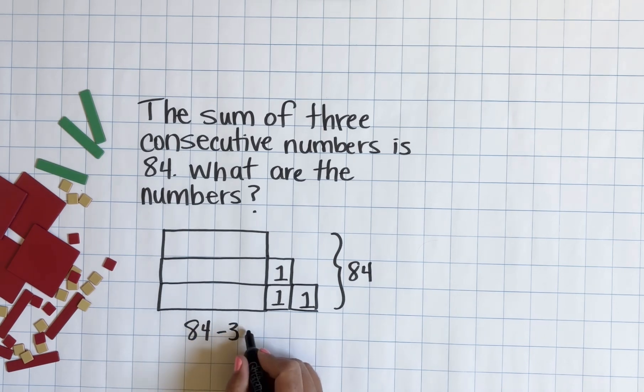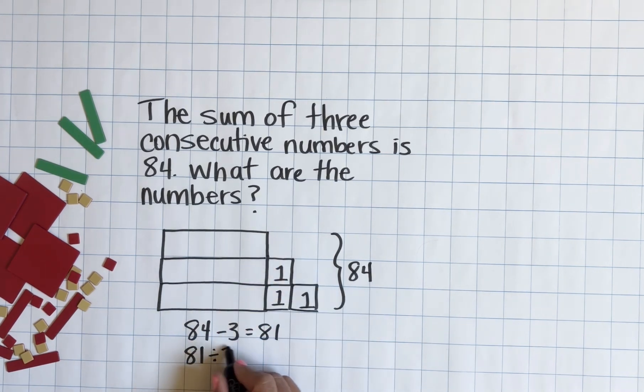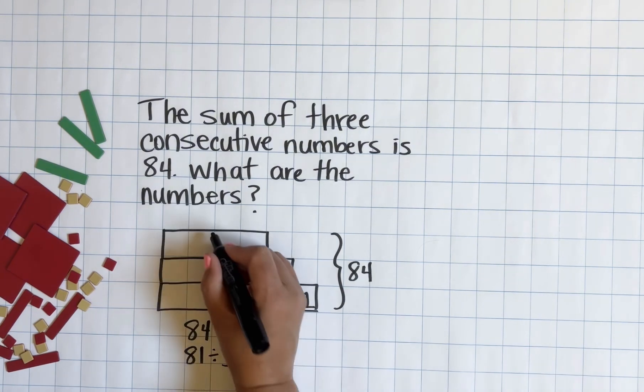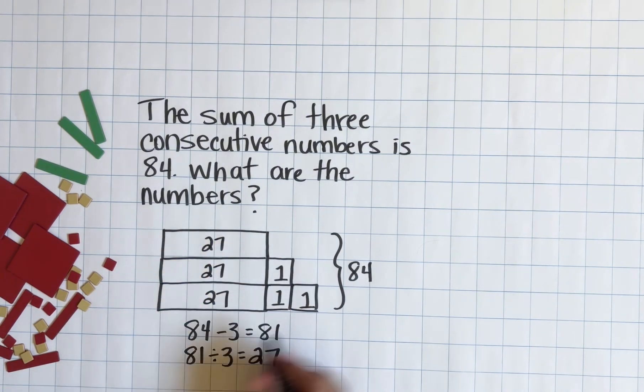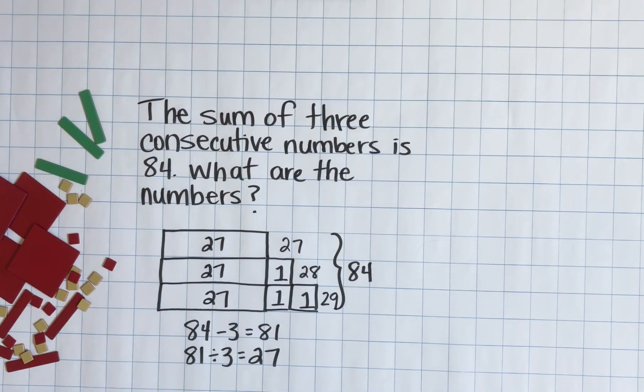So let's take a look at what these numbers might look like if we represented them visually. As you can see, we know that each number differs by one, and I've modeled that using the bar model, which allows us to easily figure out what those three consecutive numbers are.